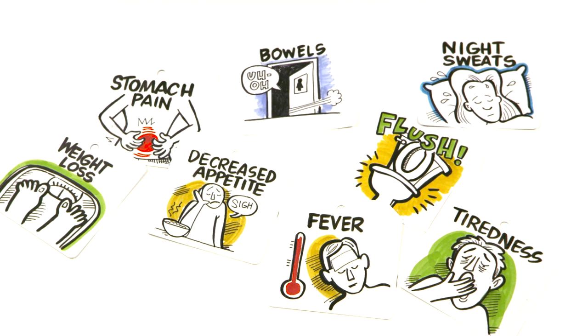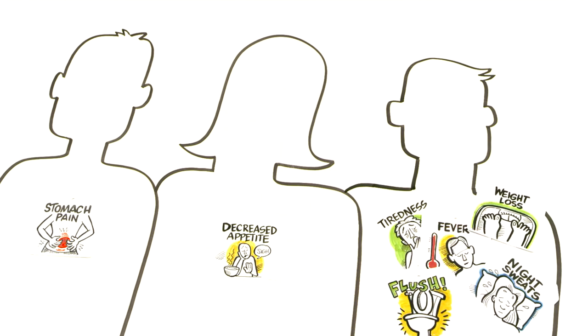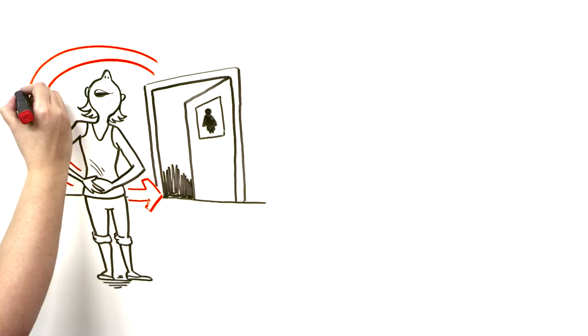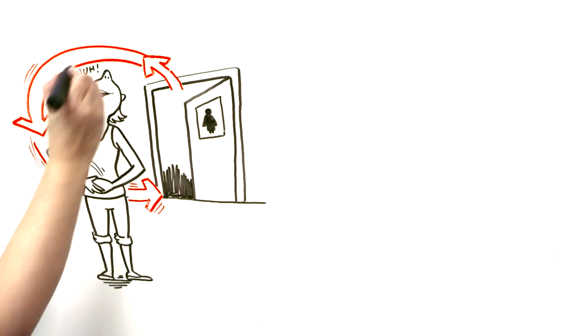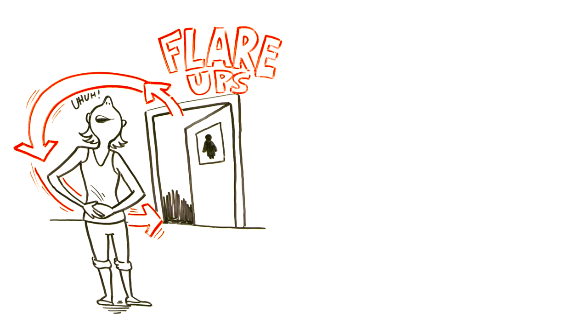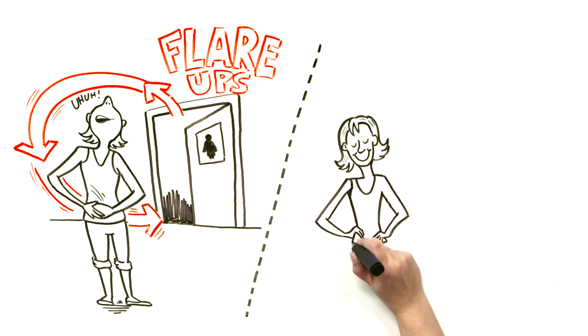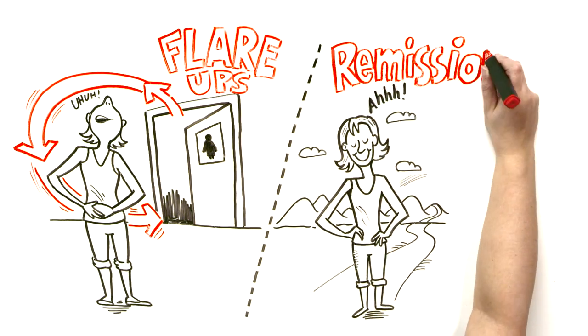Now these are trademark symptoms but it's very important to remember that IBD can play out quite differently in different people. The symptoms of IBD can come and go over long periods of time. People may experience periods of severe symptoms or what we call flare-ups and also go through periods when they have few or no symptoms at all, what we call remission.